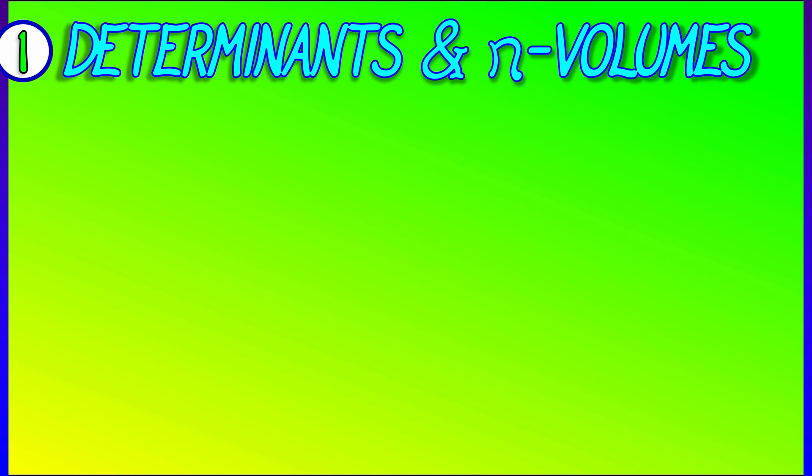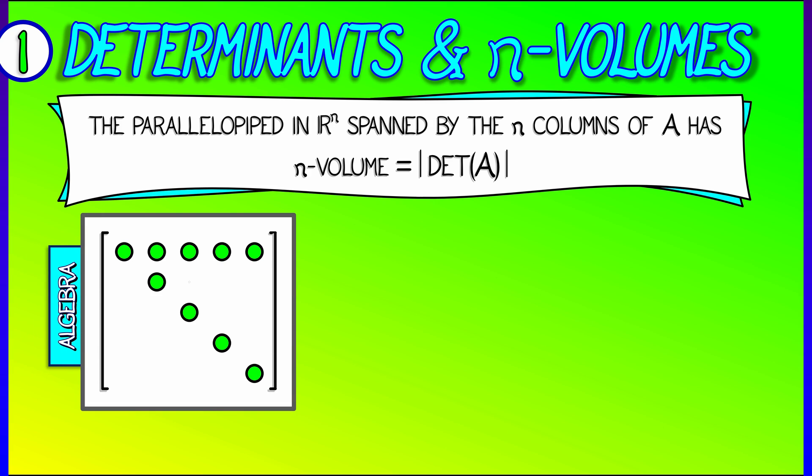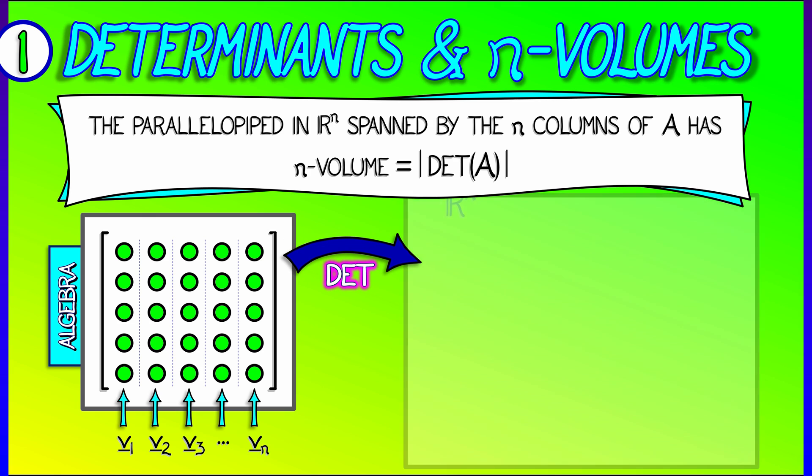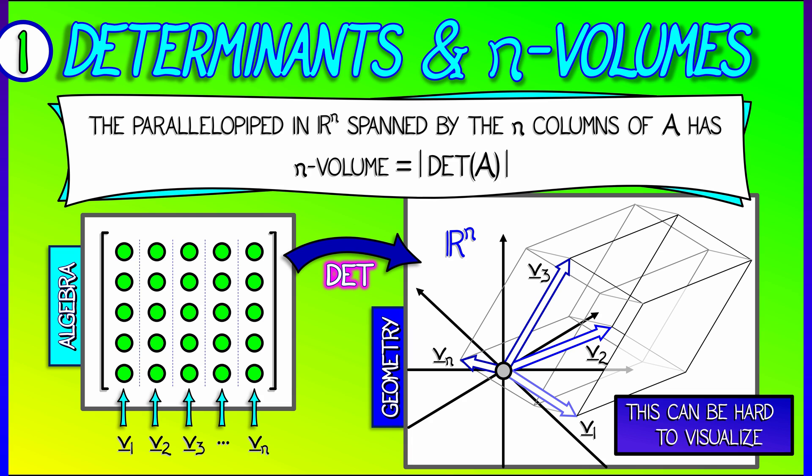So to clarify what I mean by those remarks, let's recall that if you have a square matrix A, then the columns of A span a parallelepiped in Rn with n-dimensional volume equal to the absolute value of the determinant. So we have an algebraic interpretation in terms of column vectors, and we have a geometric interpretation in terms of a parallelepiped.